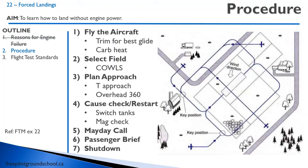Let's talk about the procedure on a forced approach. There are a number of steps. I'll go through them quickly and then discuss each one. First, fly the aircraft. Then select the field, plan the approach, do a cause check or restart, make a mayday call, brief passengers, and do an engine shutdown. So first off — flying the aircraft — that's the first thing you always do in an emergency. You're flying along, the engine fails: trim for your best glide and put your carb heat on.